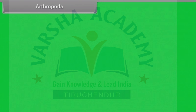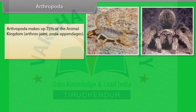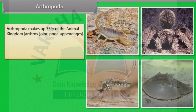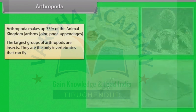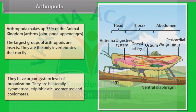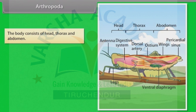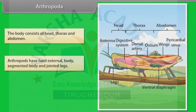Arthropoda makes up 75% of the animal kingdom. Arthros means joint and poda means appendages. The largest group of arthropods are insects — they are the only invertebrates that can fly. They have organ system level of organization. They are bilaterally symmetrical, triploblastic, segmented and coelomate. The body consists of head, thorax and abdomen.